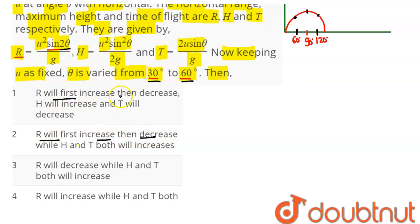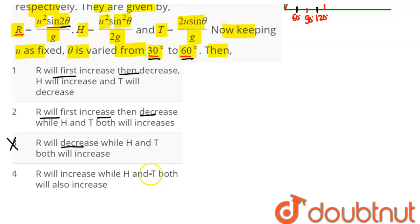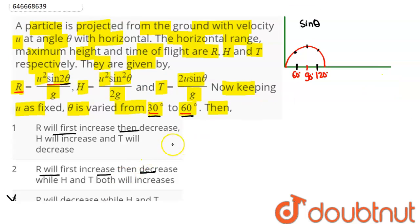Here it says R will first increase then decrease. Here it says R will decrease, which is incorrect. And in option number 4, it says R will only increase, which is also incorrect. Here we can say R will increase and then attain maximum and then decrease.